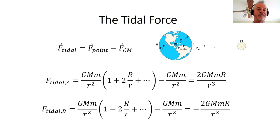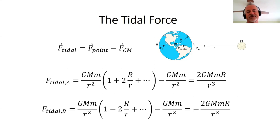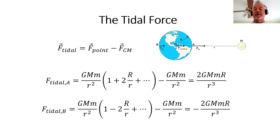Now let's define what the tidal force actually is. As commonly used, the tidal force is the difference between the force at a particular point and the force at the center of mass of the Earth — or whatever object we're considering. The tidal force at A is the approximate gravitational force at A minus the gravitational force at the center of mass, GMm/r². When we take that difference, two of those terms cancel, and what we're left with is 2GMmR/r³.